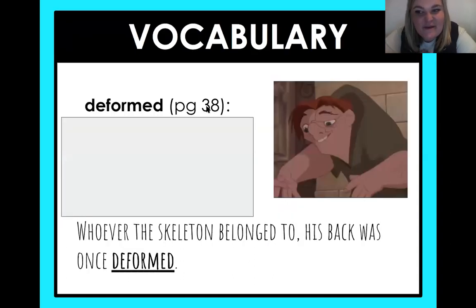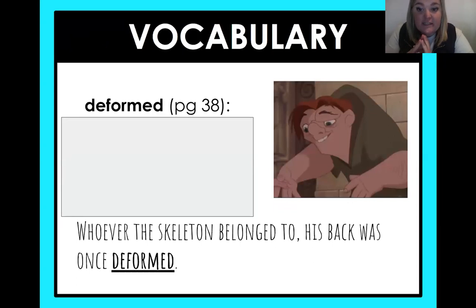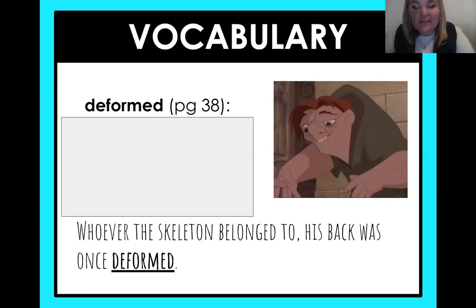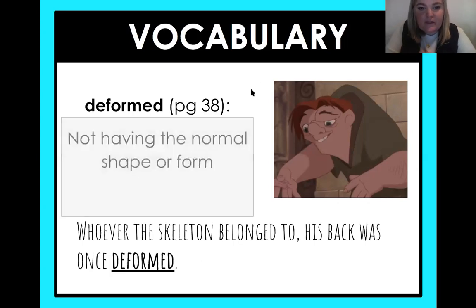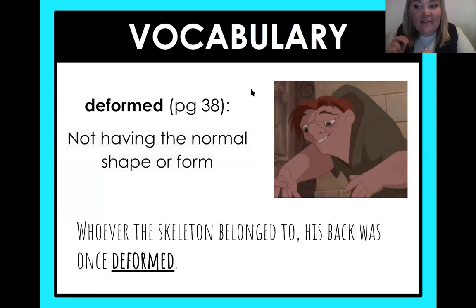Now back to vocabulary — sorry about that confusion. So we are doing two vocabulary words. The first word is 'deformed.' I'm a Disney fan, so I have here the Hunchback of Notre Dame so you can think about what that might mean. In the story, it says: 'Whoever the skeleton belonged to, his back was once deformed.' It actually means not having the normal shape or form. If you look at Quasimodo, his back is kind of messed up — so he is deformed.